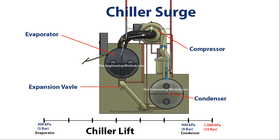Now let's say that the pressure in the condenser actually reaches 1000 kPa — 10 bar. That is much higher than the maximum pressure that can be provided by the compressor, and when the pressure in the condenser is higher than the pressure that can be applied by the compressor, chiller surge will occur. These numbers are just for example purposes — please check with your chiller manufacturer to find out what your surge line and your chiller lift are.